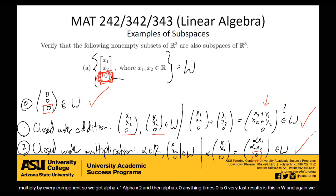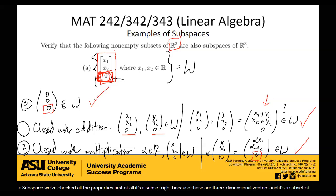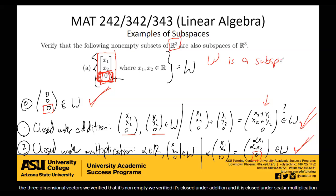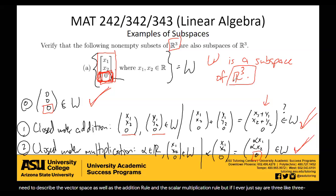Therefore, W is a subspace. We've checked all the properties: it's a subset because these are three-dimensional vectors and it's a subset of the three-dimensional vectors; we've verified it's not empty; it's closed under addition; and it's closed under scalar multiplication. Because we've checked all of those rules, W is a subspace of R3. If I ever just say R3, you are to assume that the addition and scalar multiplication are the standard ones. So we have verified that W is, in fact, a subspace.